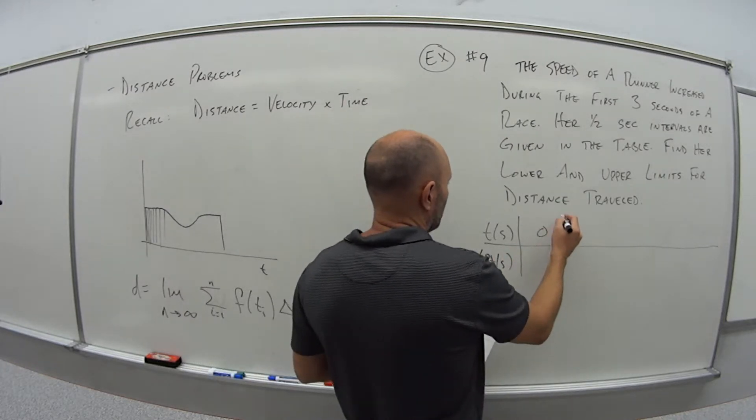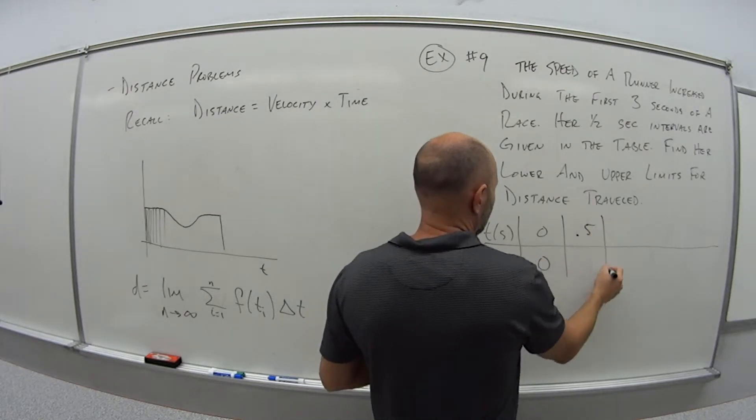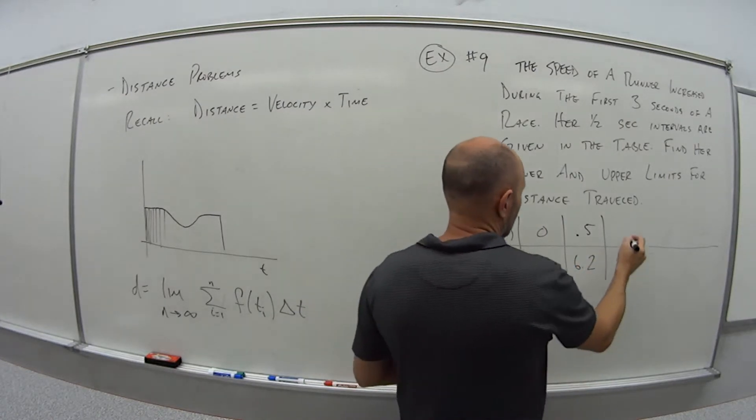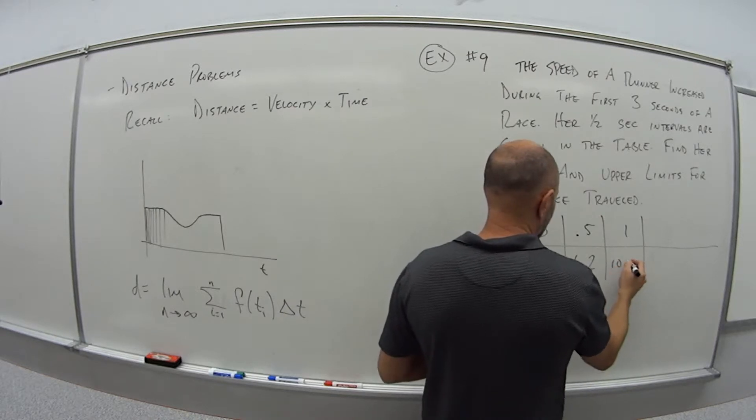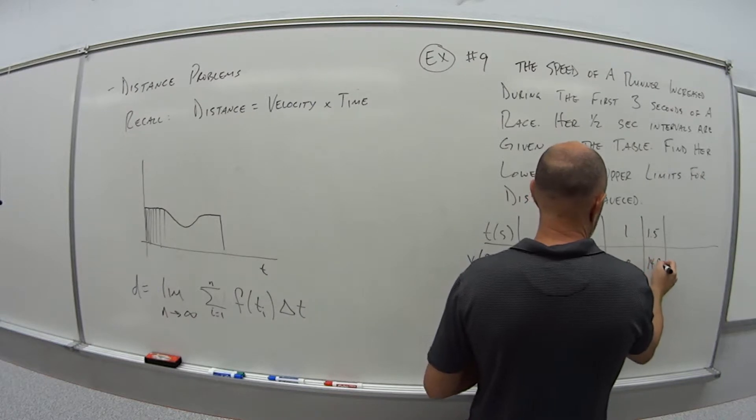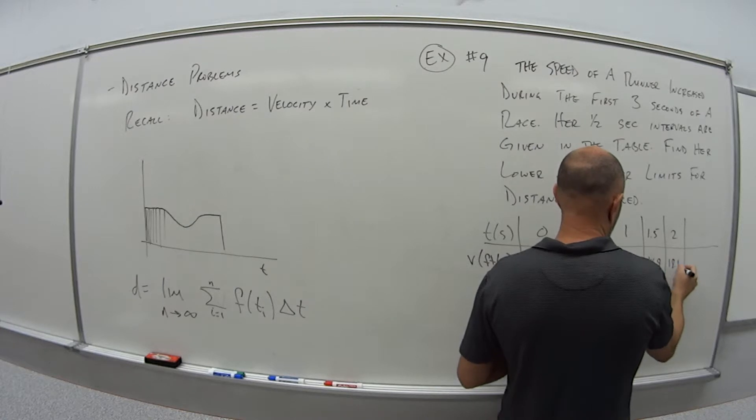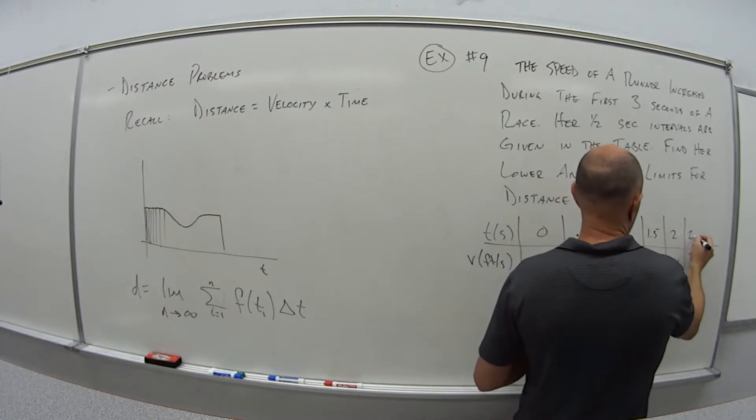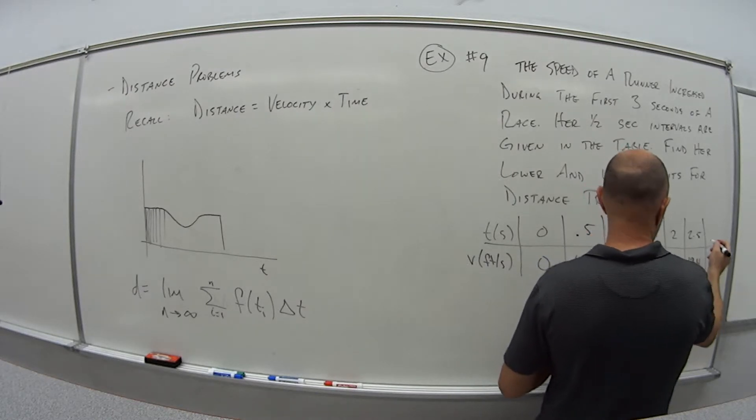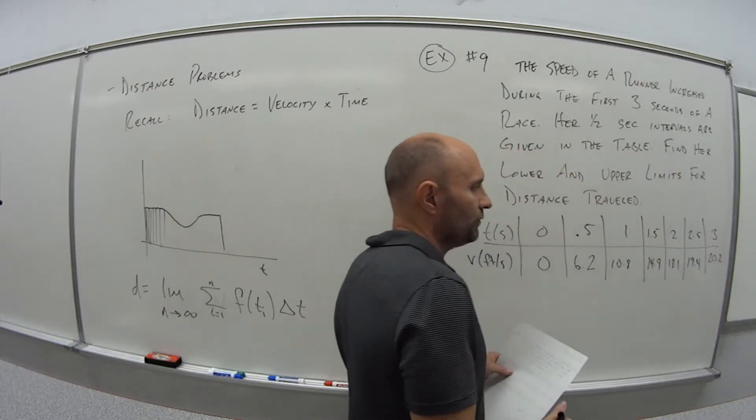So at zero, she's at zero. Half second into the race, she's at 6.2 feet per second. One second into the race, she's at 10.8. One and a half, she's at 14.9. At two seconds, 18.1. Two and a half, 19.4. And three seconds into the race, she's running 20.2 feet per second.